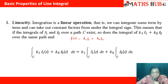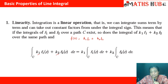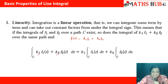So the linearity property states: the integral over C of (k1*f1(z) + k2*f2(z)) dz equals k1 times the integral over C of f1(z) dz, plus k2 times the integral over C of f2(z) dz. That is our first basic property of a line integral.